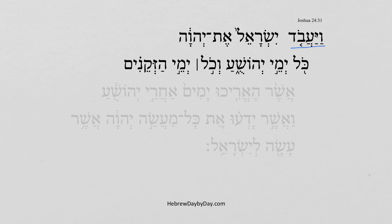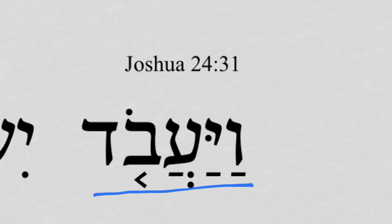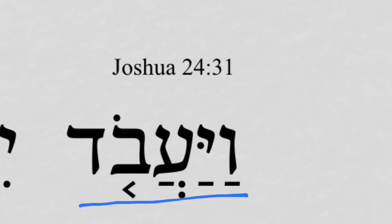Vayavod. Now here we get this from the root letters ayin, beit, dalet — meaning 'to serve.' And this has been a very much used word throughout this chapter, as we've seen.